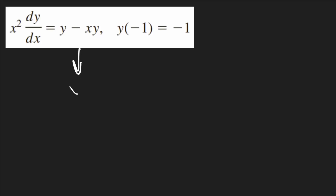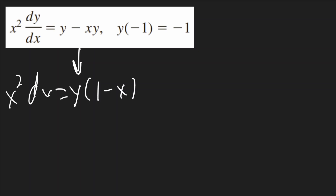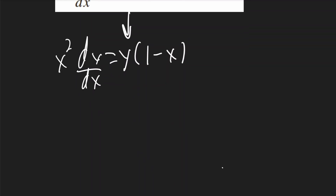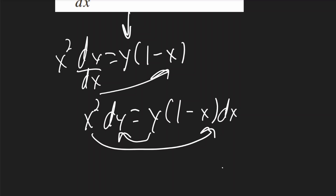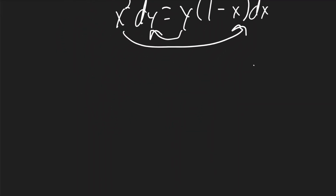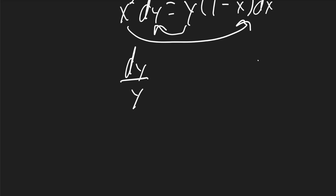In this problem, I'll start by factoring out the y on the right side. So it'll be y times 1 minus x. On the left side, it'll still be x squared times dy over dx. Now I'll multiply the dx to the other side. I'll get x squared dy is equal to y times 1 minus x dx. I'll divide the x squared to the right side and the y to the left side. So I'll get dy over y is equal to 1 minus x over x squared dx.